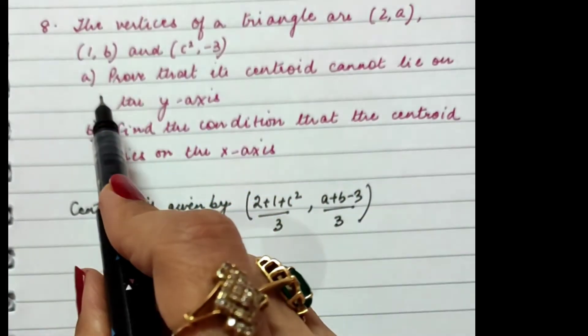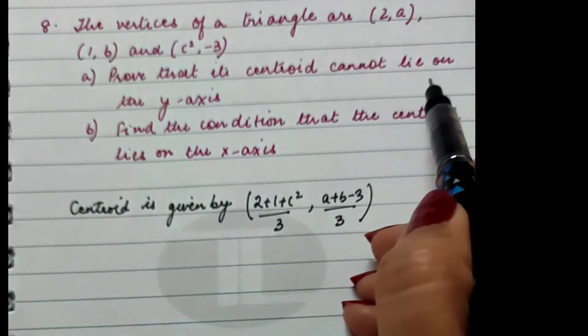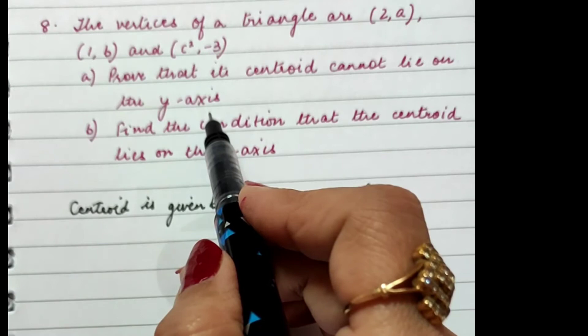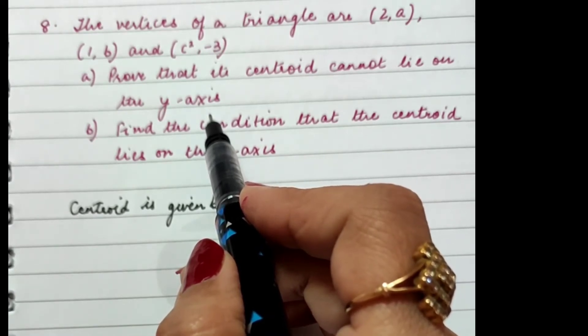Now, for the centroid to lie on the y-axis, what is the condition for a point to lie on the y-axis? Every point on the y-axis has its abscissa equal to 0.